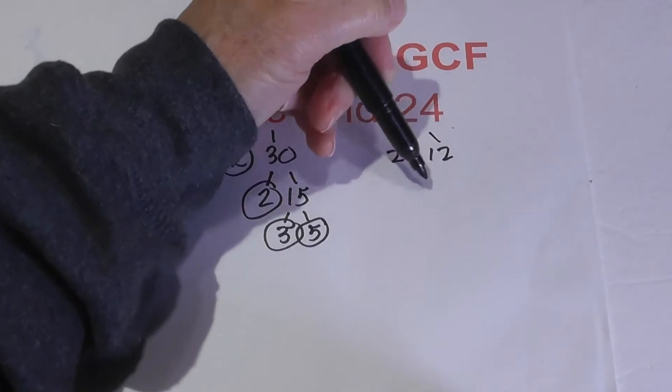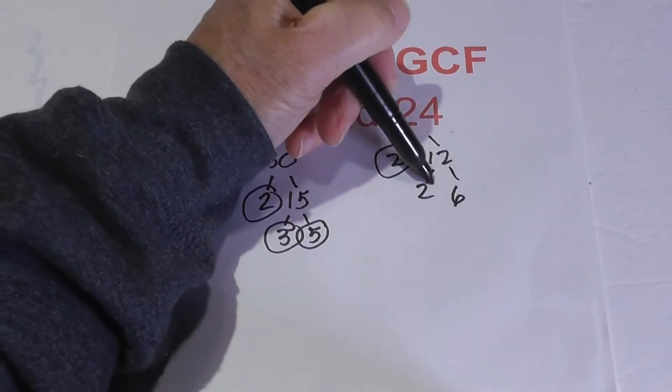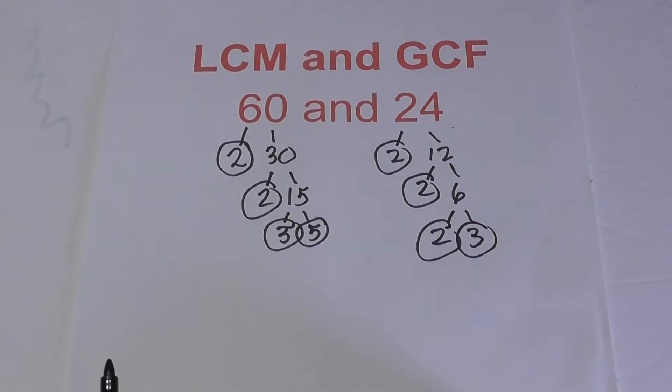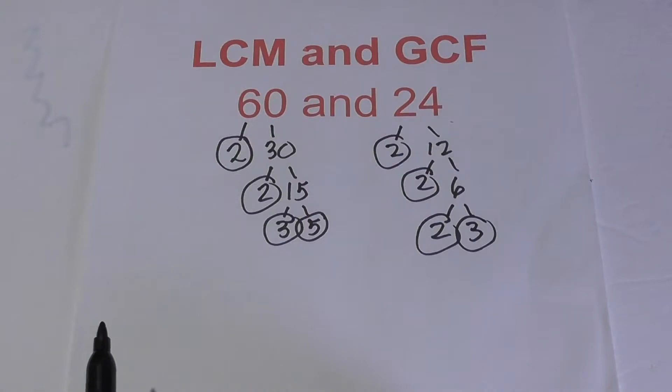For 24: 2 times 12—circle the 2. Then 2 times 6—circle the 2. Then 2 times 3. Now we have all the numbers, the prime factors. What we'll do next is put them in a nice simple chart.